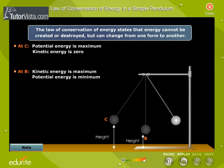When the pendulum swings from B to A, it again gains height and hence its potential energy increases. However, due to the gain in height, its velocity decreases.